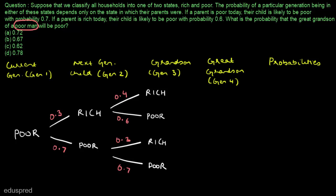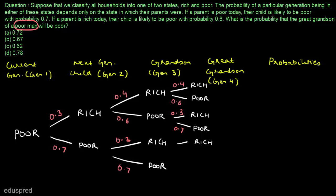Now let's move to generation number 4. In generation number 4, the child could be rich or poor. For a rich parent in generation 3, the probabilities are 0.4 (rich) and 0.6 (poor). For a poor parent in generation 3, the probabilities are 0.3 (rich) and 0.7 (poor). We fill in these branches for all four possible states of generation 3, applying 0.6/0.4 for rich parents and 0.7/0.3 for poor parents throughout.